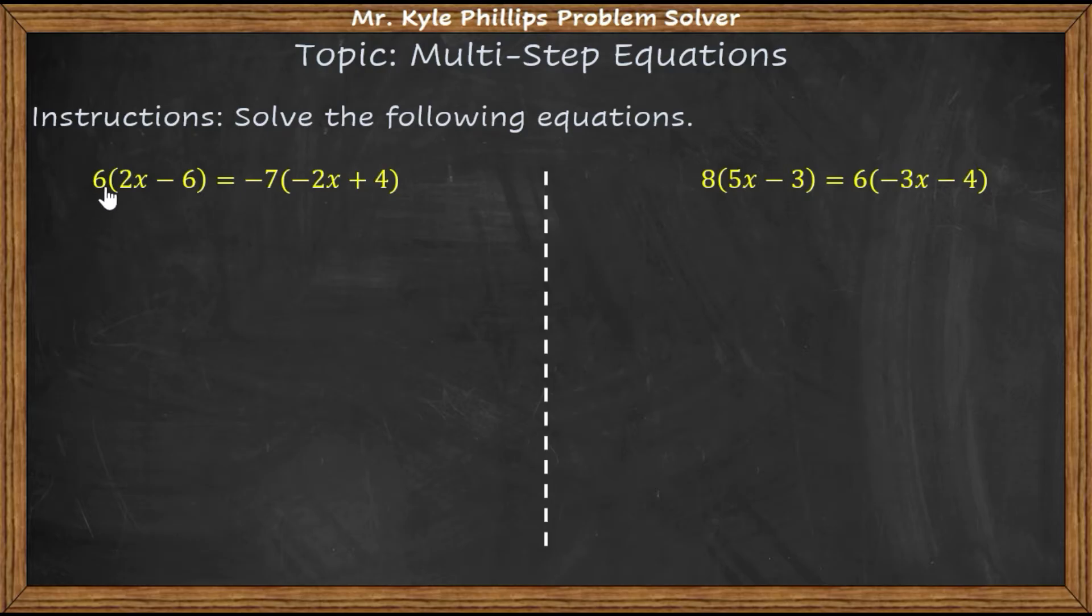So what we're going to want to do here is distribute. 6 times 2 is going to give us 12x. 6 times negative 6 is going to give us negative 36. Negative 7 times negative 2x is positive 14x. And then negative 7 times 4 is negative 28.